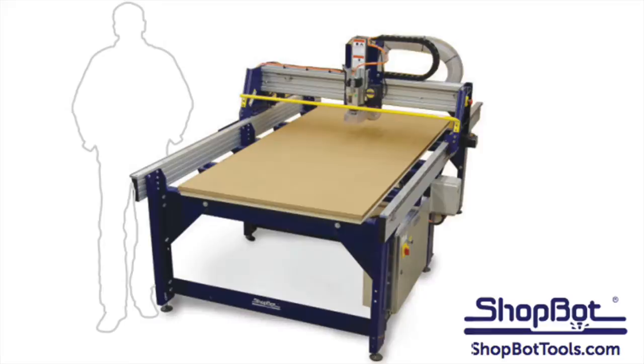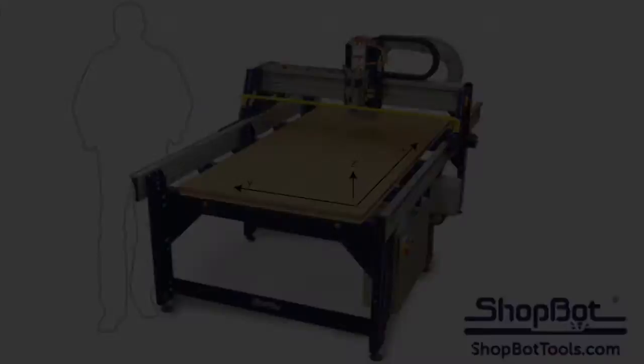The tech shop has shop bot CNC routers. On these machines, the X axis is the long axis, the Y axis is across, and the Z axis is up and down relative to the table surface.